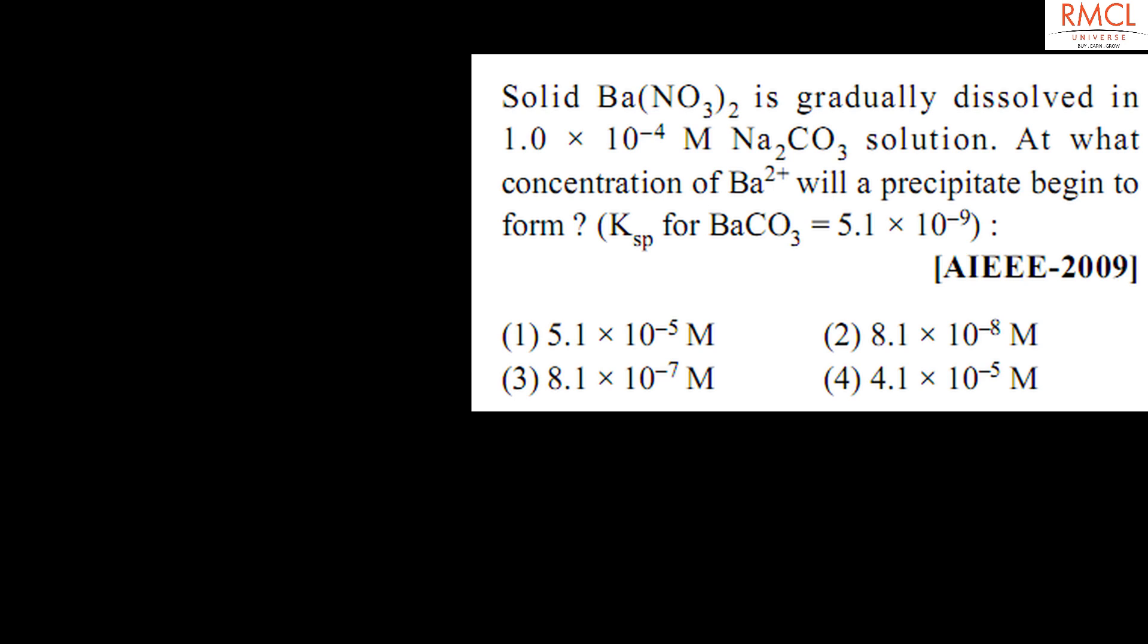So Ksp for barium carbonate is the concentration of Ba^2+ times the concentration of CO3^2-. Now, the concentration of CO3^2- is given as 1 × 10^-4, and Ksp for barium carbonate is also given in the question as 5.1 × 10^-9.